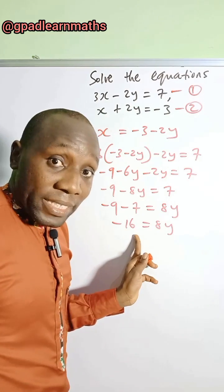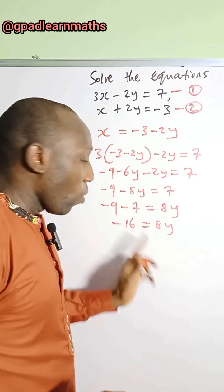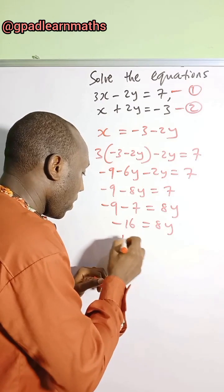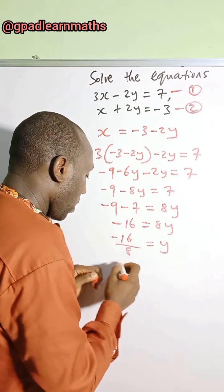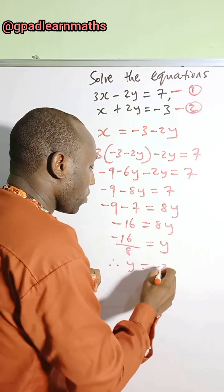If you divide both sides by 8, the value of y will be minus 2. Because you will have minus 16 over 8, which is equal to y. Therefore, y is equal to minus 2.